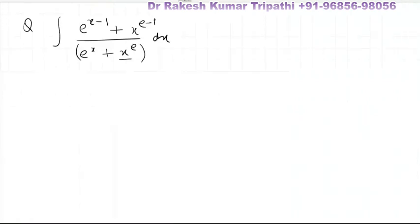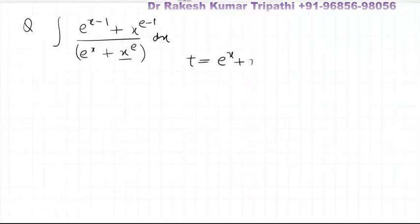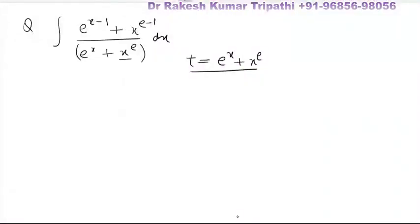So it seems the numerator can be made the derivative of the denominator. On this ground, we can put the denominator as t — we are just predicting that the numerator may be the derivative of the denominator. Whenever we put something in an indefinite integral, we differentiate at the same moment.